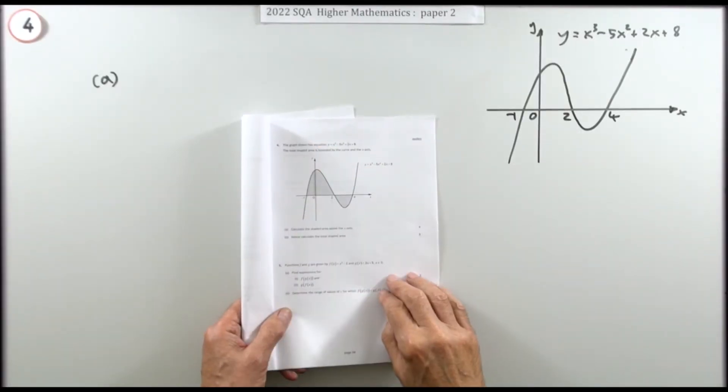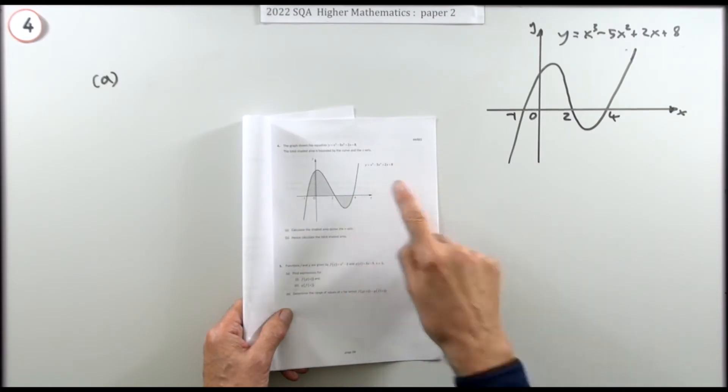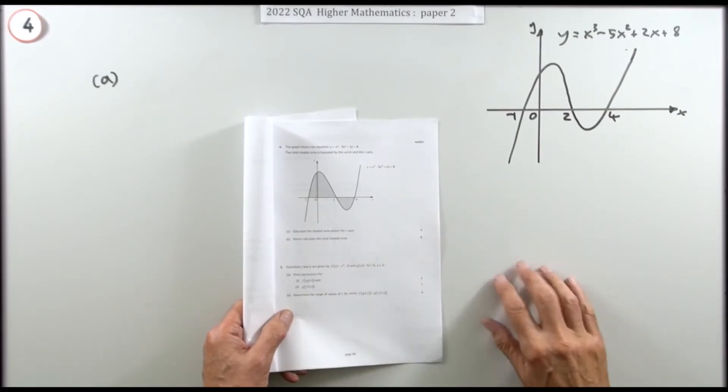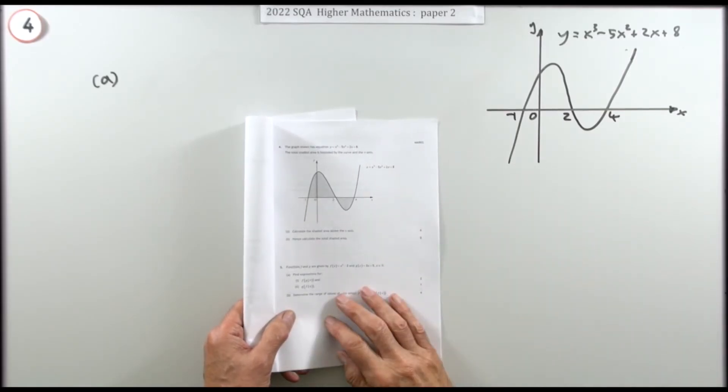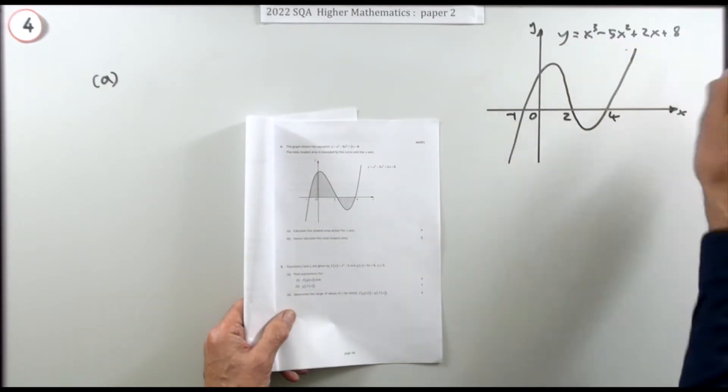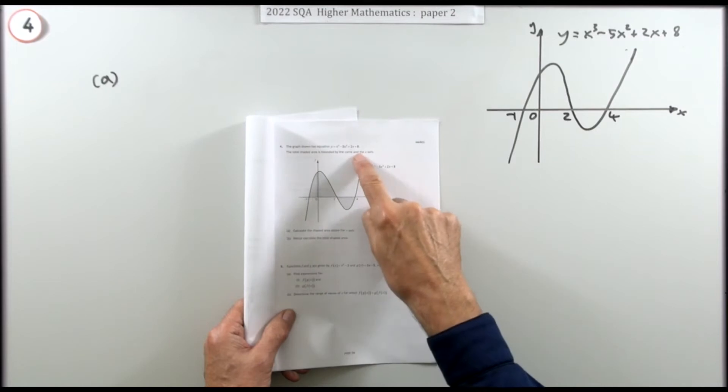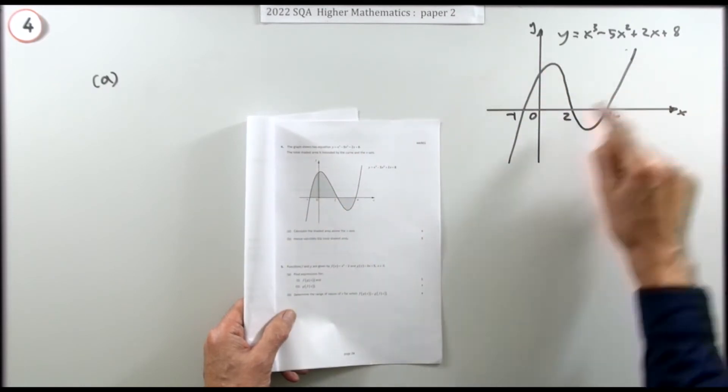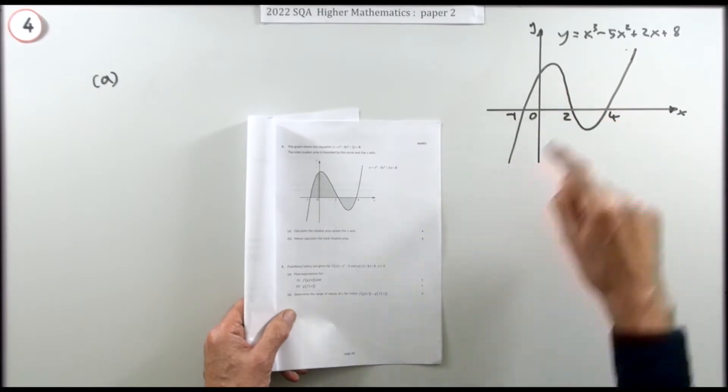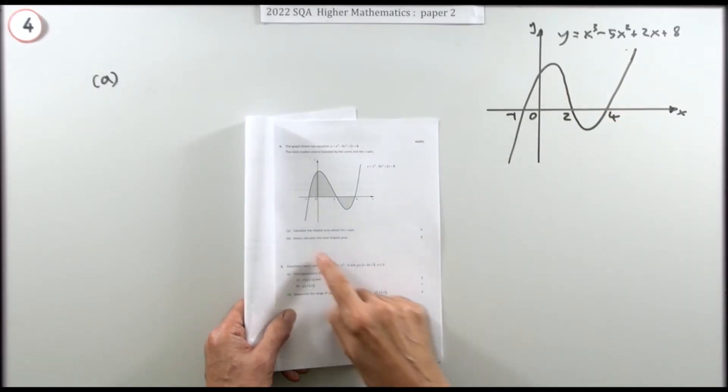Now number 4 from the 2022 Higher Maths paper 2, a 7 mark question on area under a curve. It's fairly straightforward apart from all the arithmetic, but it is paper 2 so it's just lots of pressing buttons in a calculator. This graph has the equation x cubed minus 5x squared plus 2x plus 8. The total area bounded by the curve and the x-axis, those areas trapped between the curve and the x-axis, but you have to do it in two parts.